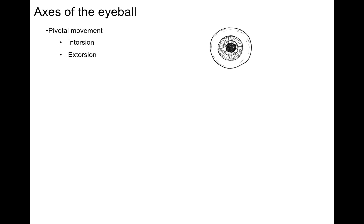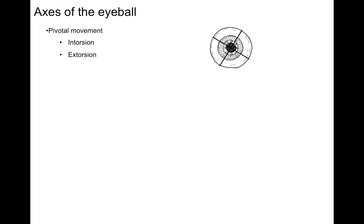And then finally, a pivotal movement, or intorsion and extorsion. This is an interesting one because the eye rotates along itself. Adding these crossbeams, you can see this eye as it rotates through a plane — through the crosshairs, right into and out of your screen.